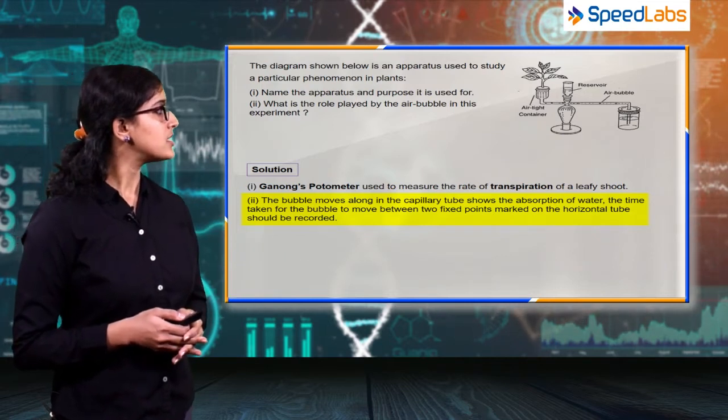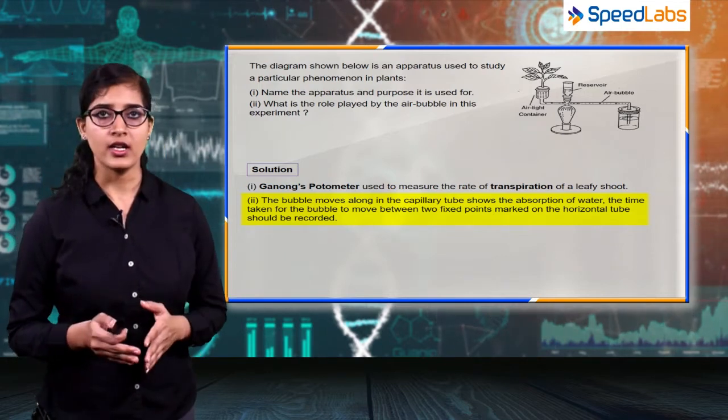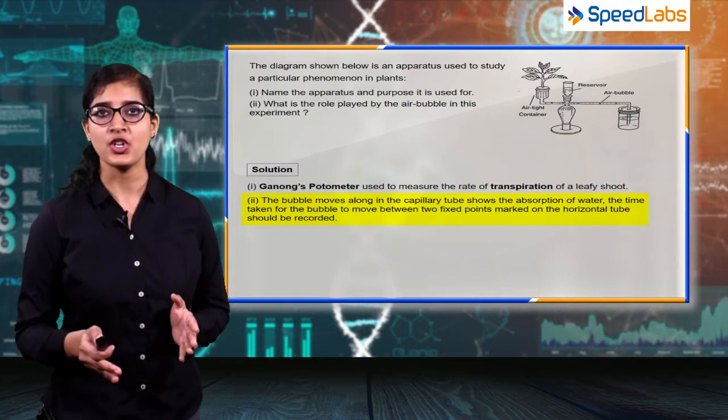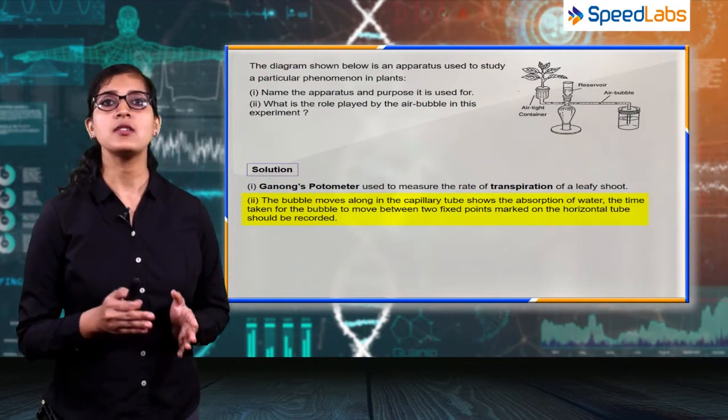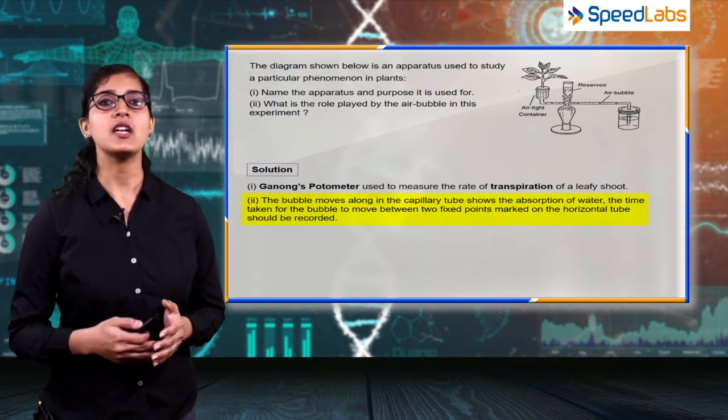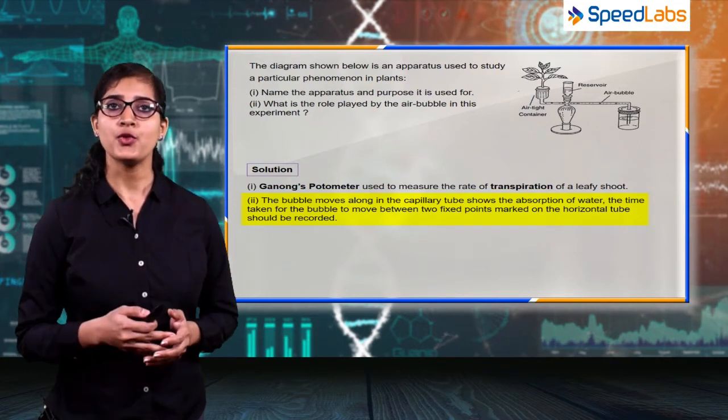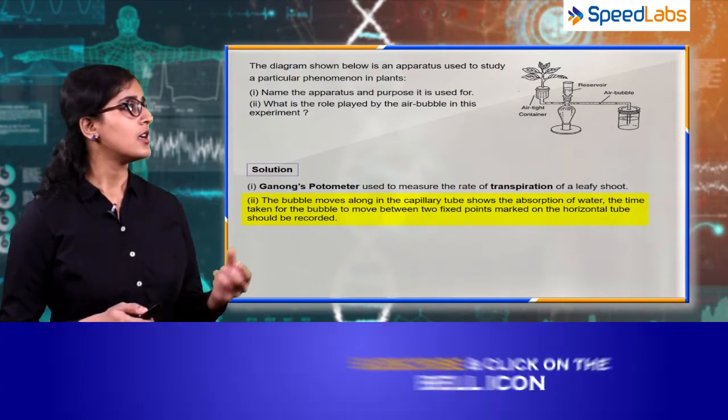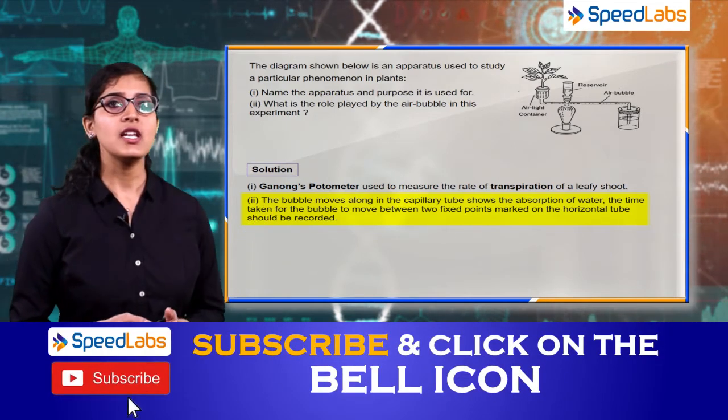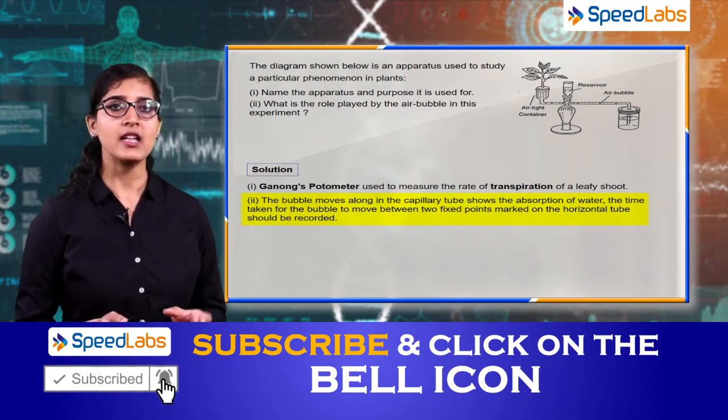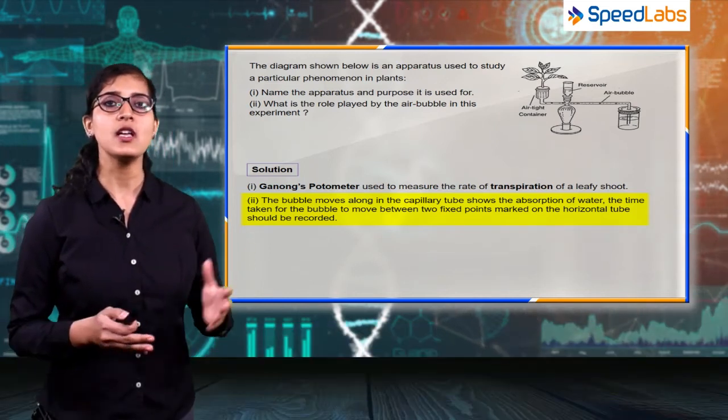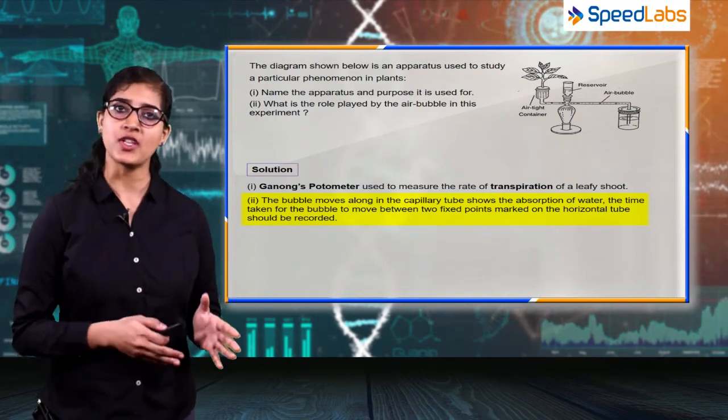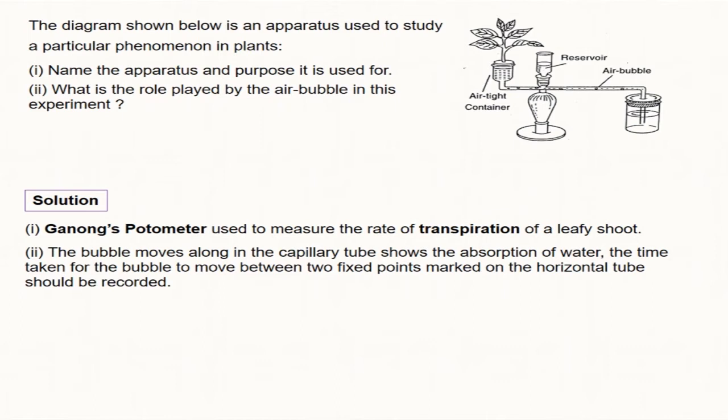You have to record the time—like in five minutes, what is the position of the bubble; in ten minutes, what is the position of the bubble—and hence we are calculating the rate of transpiration. The important part of this experiment: it's actually related to absorption of water by the roots, but absorption is approximately equal to transpiration, so by this we can measure the rate of transpiration.